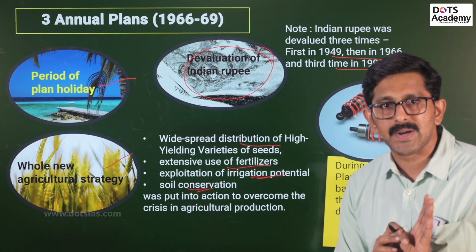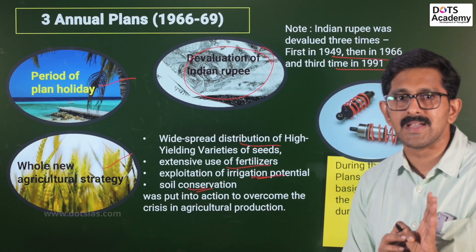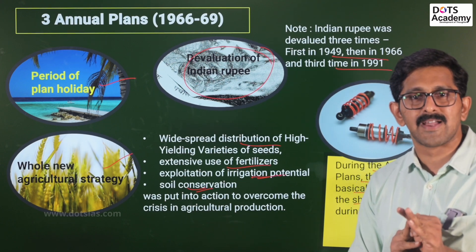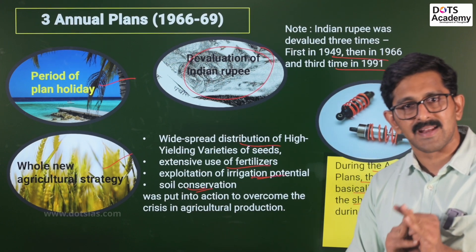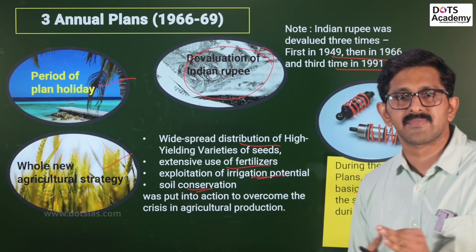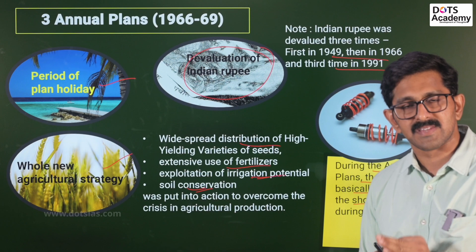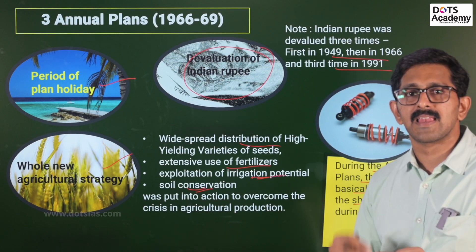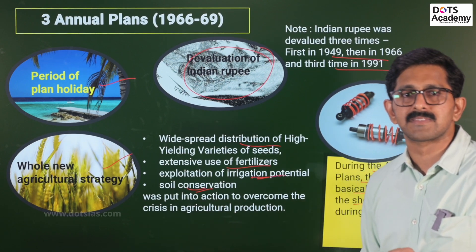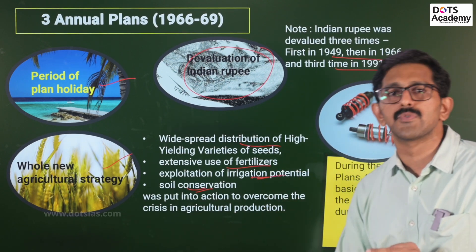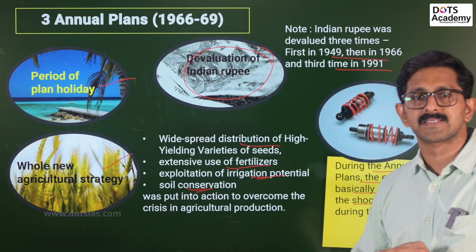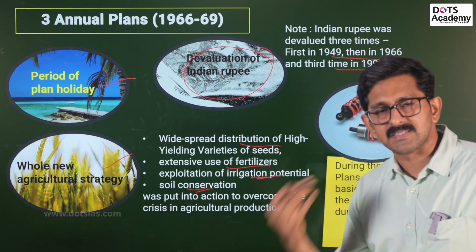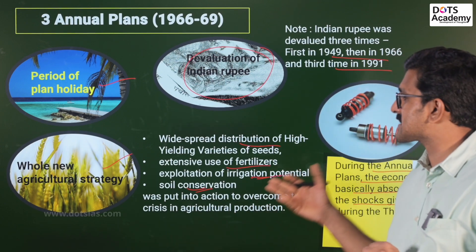During the annual plans — also called the plan holiday — the economy absorbed the shocks from the third plan. There was Indian currency devaluation. India focused on high-yielding varieties of crops, intensive use of electrolysis for irrigation, and maximum irrigation projects.